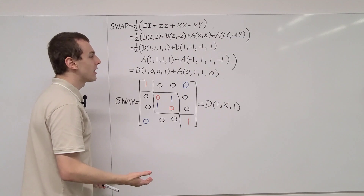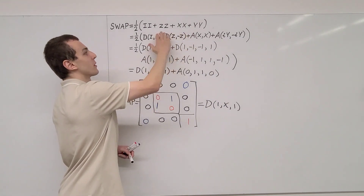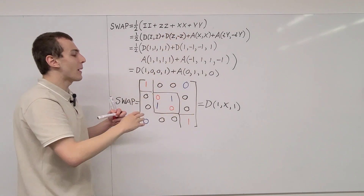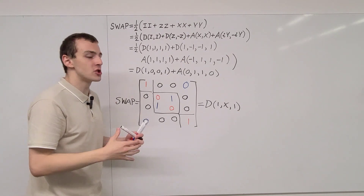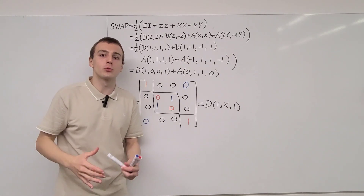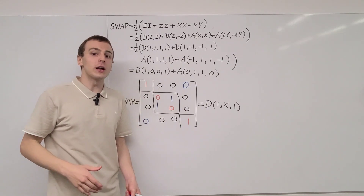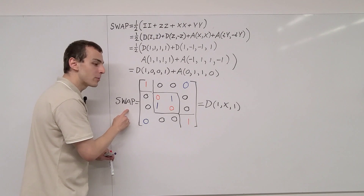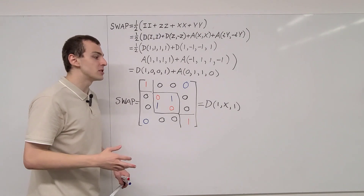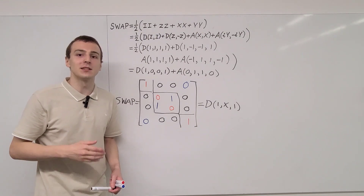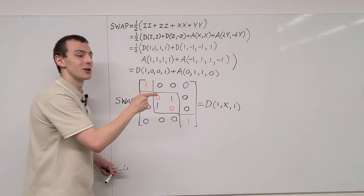Hopefully this video was informative and showed you how to take tensor products of the Pauli matrices and the different patterns that emerge when you construct matrix representations of two-qubit gates. We're going to see two-qubit gates like the swap gate used in quantum circuits in other videos in the quantum mechanics playlist.